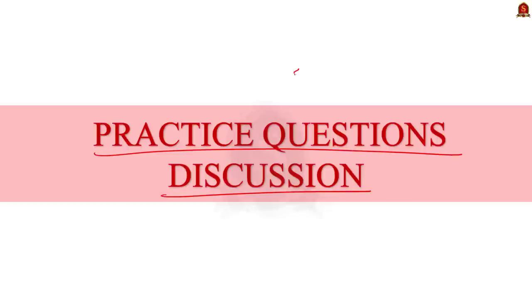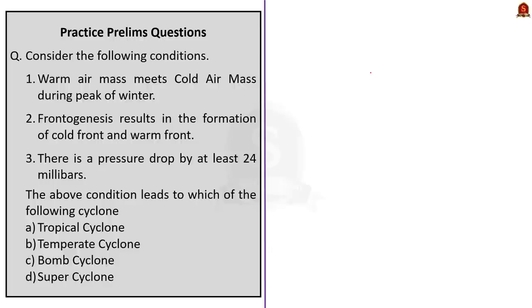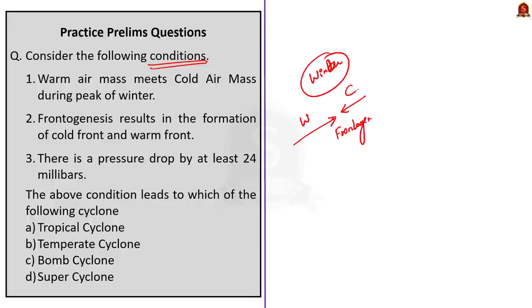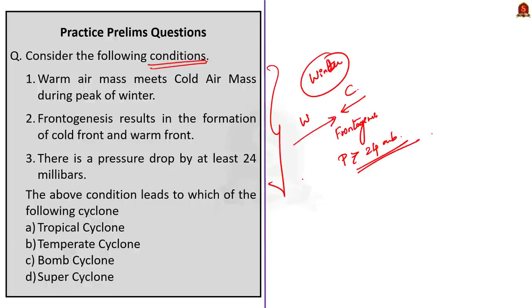Today we have 5 prelims questions — I will solve 4 of them, and one is a quiz question for you. Question 1: Consider the following conditions — Statement 1: Warm air mass meets cold air mass during peak of winter; Statement 2: Frontogenesis results in the formation of cold front and warm front; Statement 3: There is a pressure drop by at least 24 millibars. The above conditions lead to which cyclone? Option A: Tropical cyclone; Option B: Temperate cyclone; Option C: Bomb cyclone; Option D: Super cyclone. We discussed this elaborately — all these conditions are the requirements for bomb cyclone. The correct answer is Option C: Bomb cyclone.